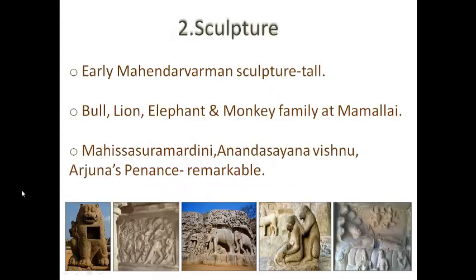Next, Sculpture. Beautiful sculptures are found in the temples noted above. The early Mahendra Varman sculptures are tall. Monolithic animals like bull, lion, elephant and monkey family are at Mamallapuram. The battle scene of Mahishasura Mardini, the Anantashayana of Vishnu, and the panel depicting Arjuna's Penance are remarkable.